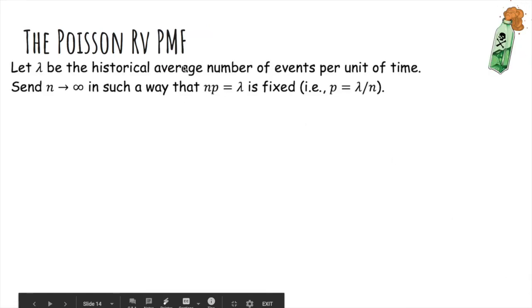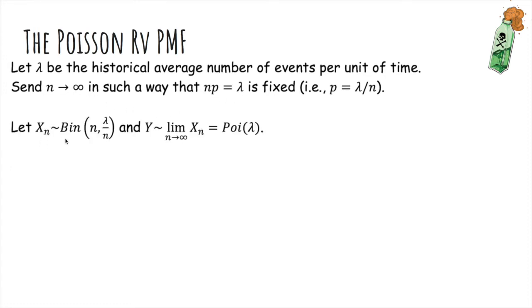So let lambda be the historical average number of events per unit of time. We're going to let n go to infinity in such a way that np is always equal to lambda. So p is going to 0, and n is going to infinity, but np is equal to lambda. Let X_n be binomial with parameter n and lambda over n. This will make sure the average is lambda. And Y will be the limit as n goes to infinity. And this is called a Poisson random variable with parameter lambda.